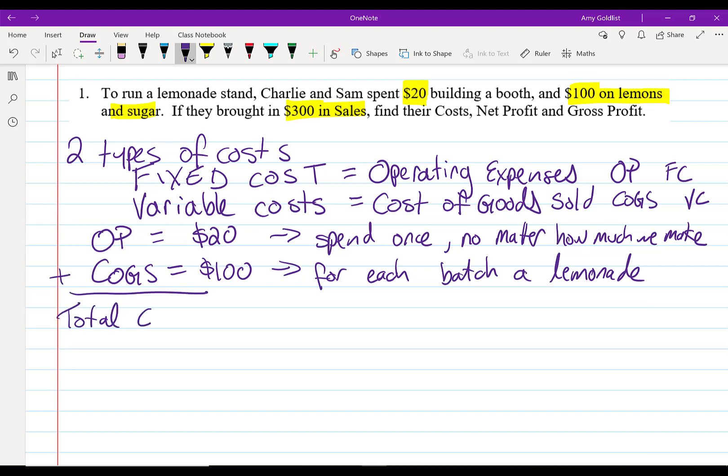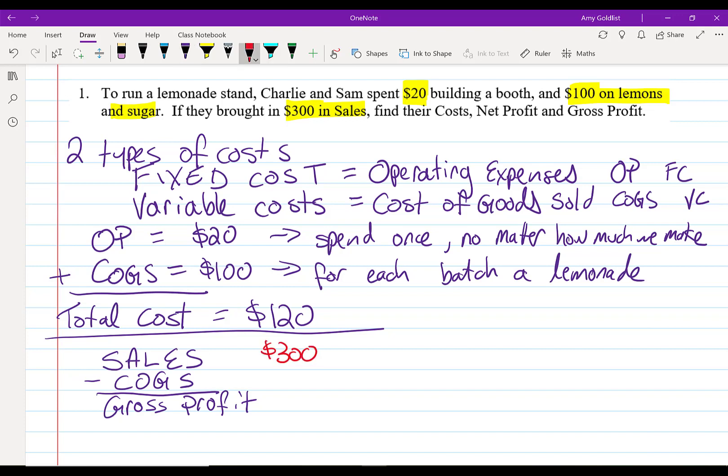So what's our total costs? $120 or $100 plus $20. That is our two types of expenses. So now what we can do is look at what we call an income statement. We write down our sales. Then we subtract the cost of goods sold. And at the end, what we get is called a gross profit. So in this case, we have $300 in sales minus $100, which gives us a gross profit of $200.